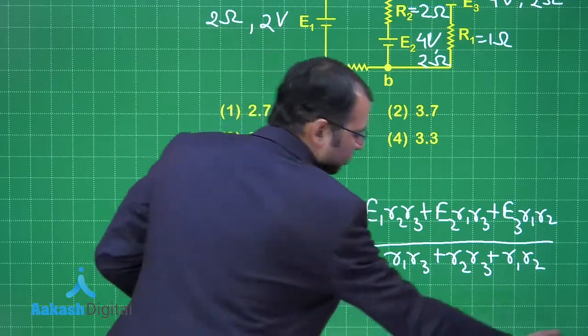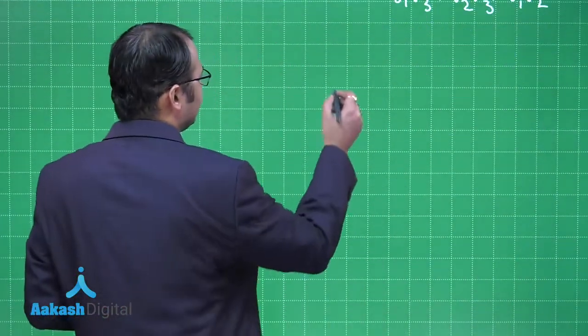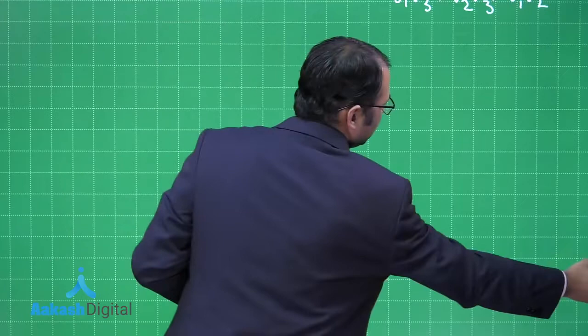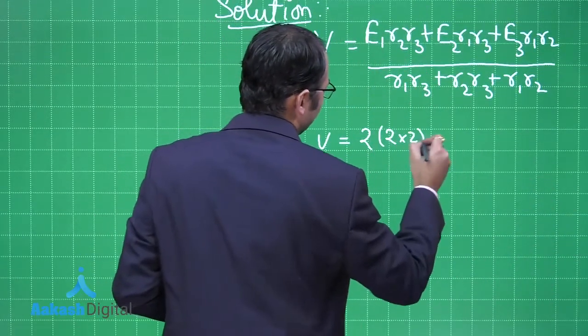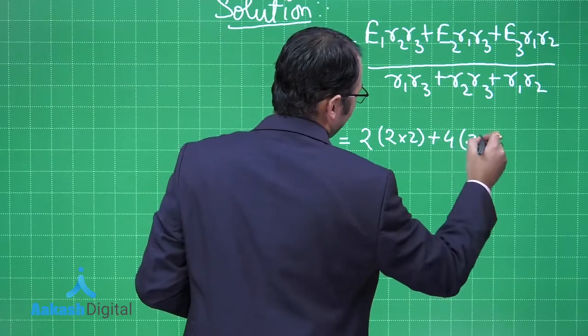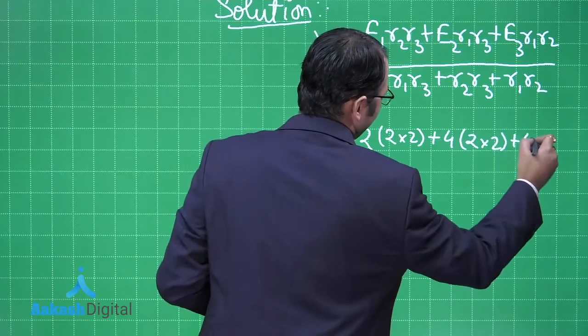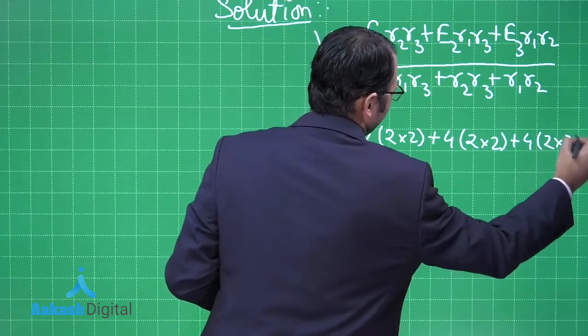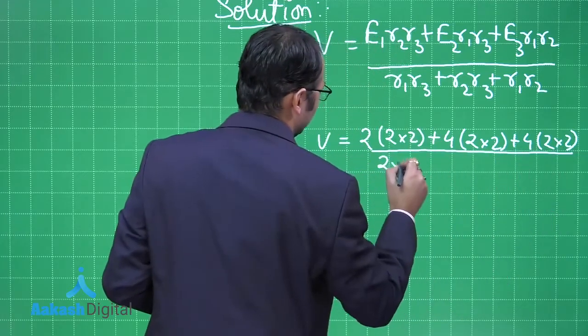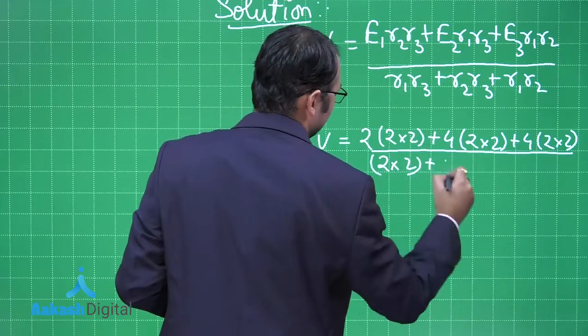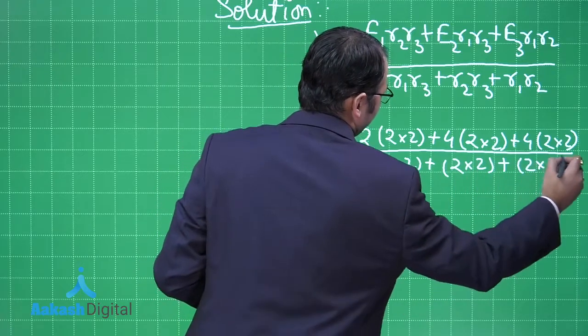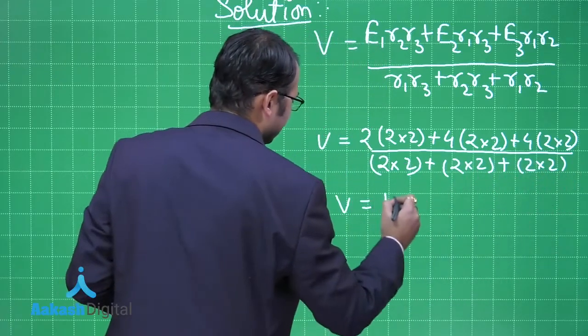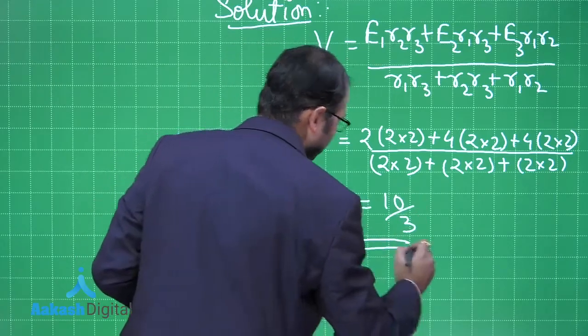Now we just put the values and we'll get the answer. V equals E₁ is 2 times 2 times 2, plus 4 times 2 times 2, plus 4 times 2 times 2, divided by the denominator. Plus 2 times 2. When you solve this, you will get V as 10/3 volts.